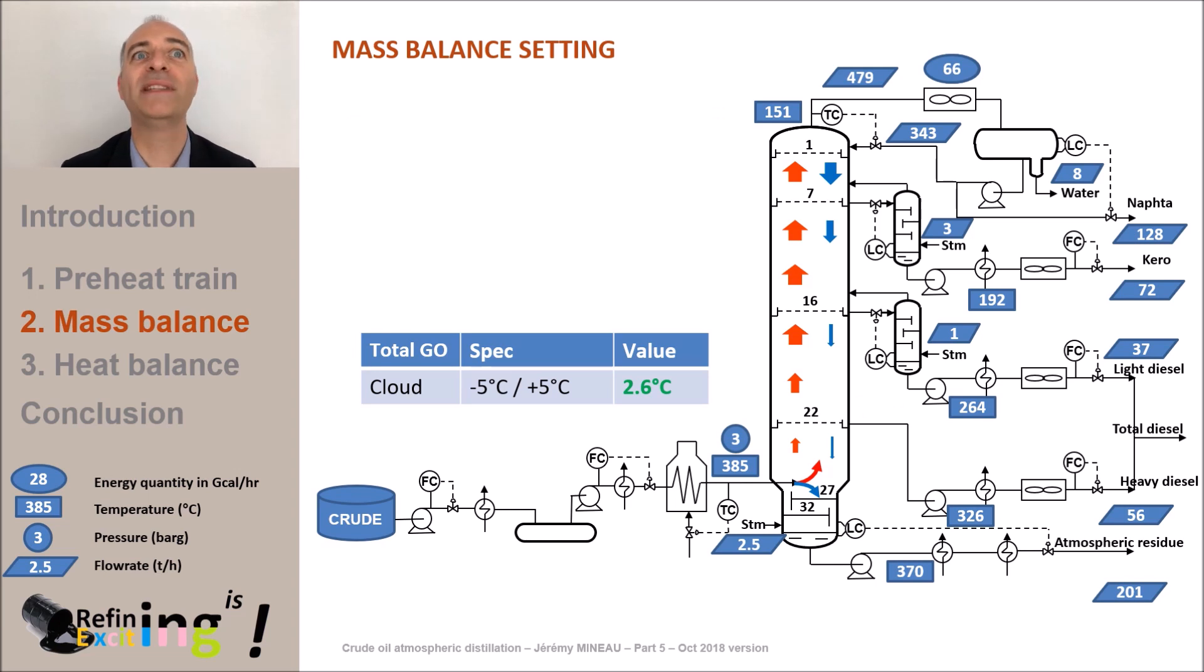A side stripper is also installed on a heavy diesel cut. The advantage of stripping heavy diesel is to re-entrain the lightest molecules of heavy diesel to the light diesel. And, therefore, better sort the sulfur molecules.